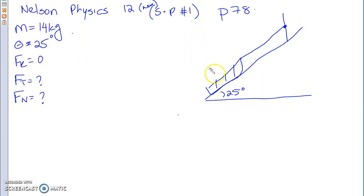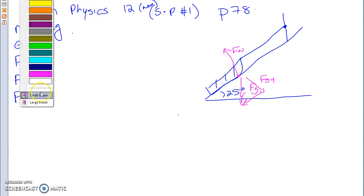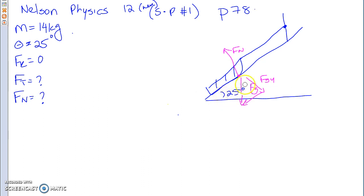Force normal going upward like so. Then you're going to have your FG this way, FGY and FGY, and of course FGX. What we have is your FG, FGX, and FGY. There's your FN. Tension is opposite to the force, the X component of your gravity. So there's your tension going in the opposite direction.